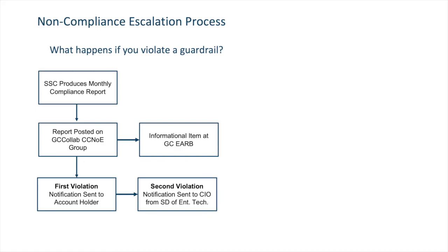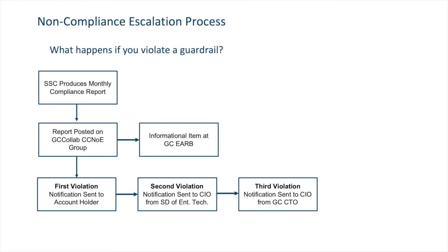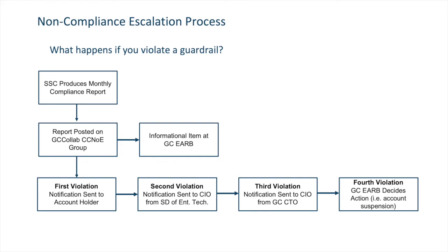If there is a second violation, there's a notification to the departmental CIO from the Senior Director of Enterprise Technology within OCIO, the Office of the Chief Information Officer. A third violation moves further up the escalation chain — it's now a notification to your CIO, but it's coming from the Government of Canada Chief Technology Officer. And then finally, if departments persist and there's a fourth violation, the Government of Canada Enterprise Architecture Review Board exercises its governance role and decides on an action. That could range from requiring the department to produce an action plan, all the way up to escalating to an account suspension.